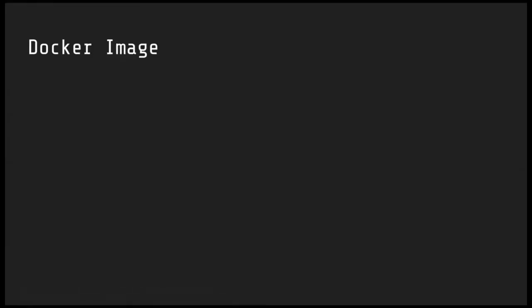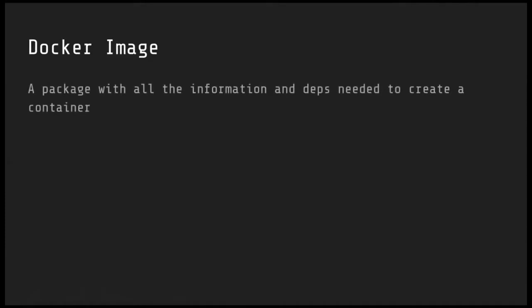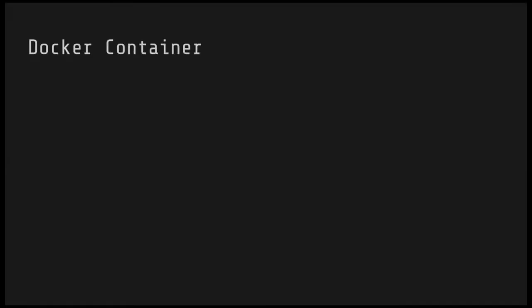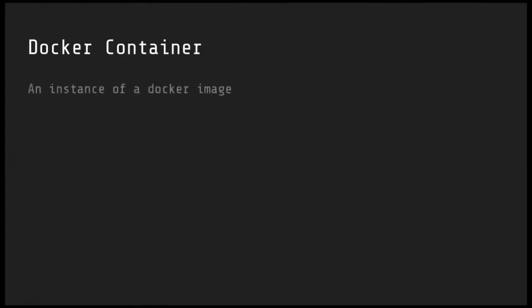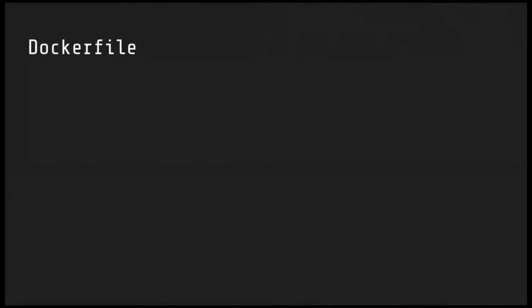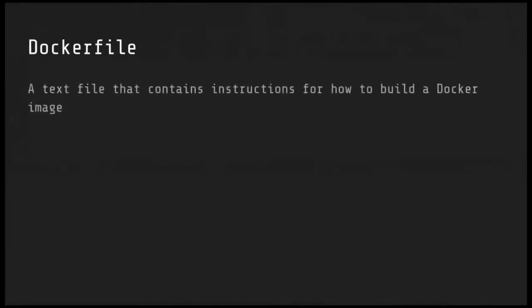Let me get some terminology out of the way. Docker images package all the information necessary to spin up a Docker container. Docker containers are instances of a Docker image — you can run multiple containers from one image. A Dockerfile is a text file containing instructions to build the Docker image.